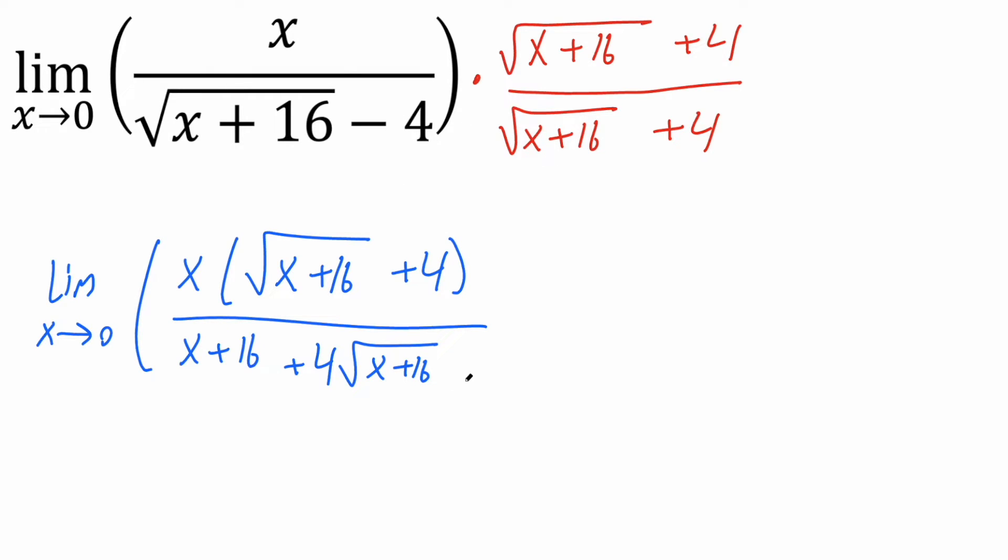Then minus 4 times the same piece. It's going to cancel out, but let's write it out. Negative 4 times the square root of x plus 16, and then negative 4 times 4 is negative 16.